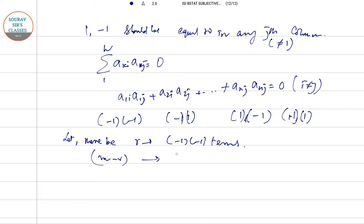As total m terms are in the ith column, as m terms in ith column are minus 1, so m minus r number of terms will be 1 into minus 1, and hence r terms will be 1, 1, as the sum is 0.